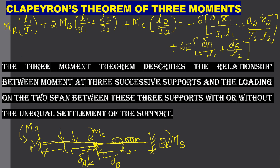Here, M_A is the moment at A, M_B is the moment at B, and M_C is the moment at C. L1 is the span length of the first span, L2 is the length of the second span. I1 and I2 are the moments of inertia of the first and second spans respectively. A1 is the area of the bending moment diagram of the first span and A2 is the area of the bending moment diagram of the second span. X1-bar and X2-bar are the distances of the centroid of the bending moment diagram from the supports. Delta_A and delta_B are the settlements of the supports.